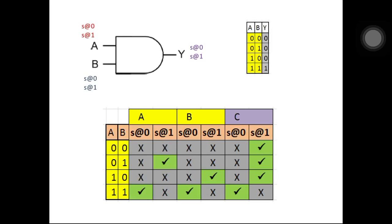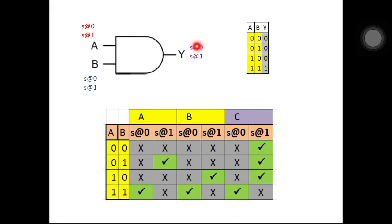Today we will discuss about the topics fault equivalence, fault collapsing, and fault dominance. Before that, we will see what are the faults which are covered for a 2-input AND gate. At node A we are covering stuck-at-0 and stuck-at-1 faults. At node B we are covering stuck-at-0 and stuck-at-1. At the output node Y we are covering stuck-at-0 and stuck-at-1. So total 6 faults are covered for a 2-input AND gate.